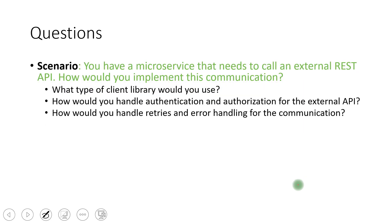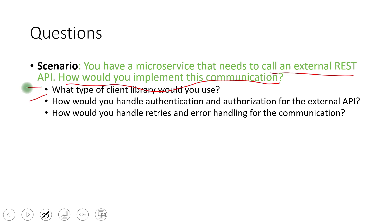The next scenario: you have a microservice that needs to call an external REST API — how do you implement this communication? You need to know different ways to call REST APIs. In Java, there is RestTemplate, Spring Cloud's Feign Client, and WebClient. For authentication and authorization of external APIs, we can use tokens and Spring Security. For rate limiting, error handling, and preventing cascading failures, the circuit breaker pattern is very important.